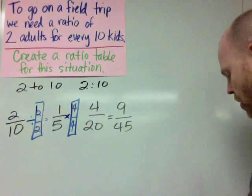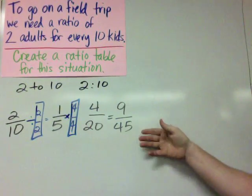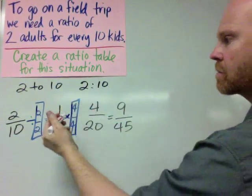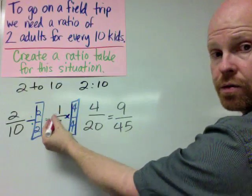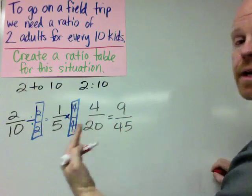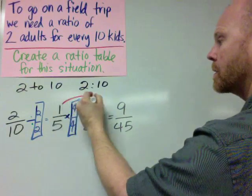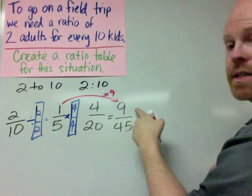Similarly, we can show that 9 to 45 belongs in this list, because we can multiply 1 fifth, or the ratio 1 to 5, by 9 over 9.